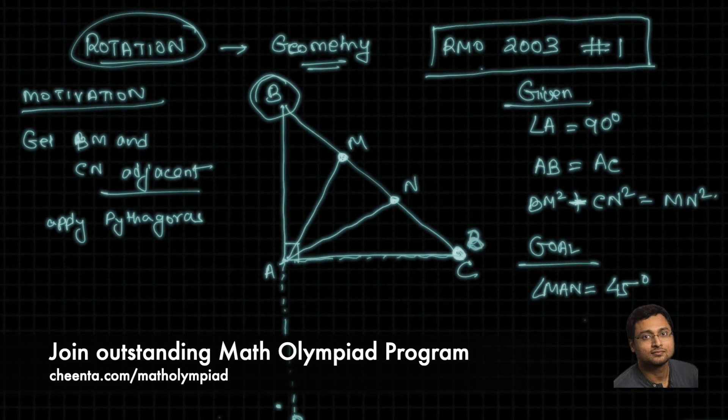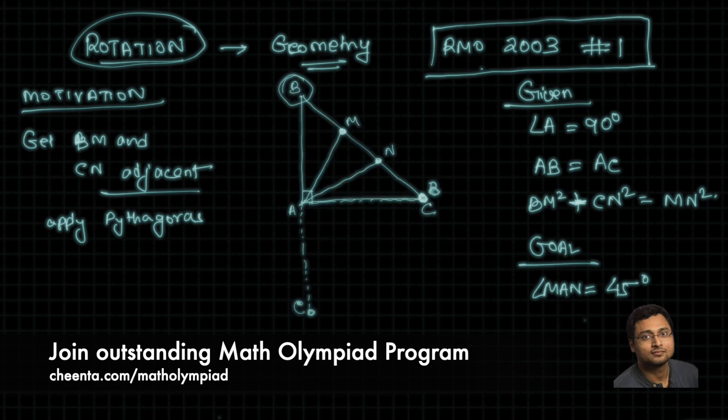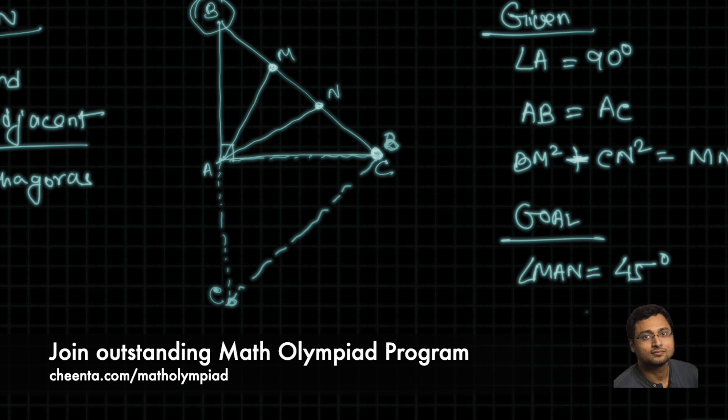This point is C and if we join these two lines, it will be BC. So, let's join it. Now, where is M? Of course, M is closer to B. So, M is somewhere here. Let's call it M prime. In fact, let's call this one C prime and this is B prime. And this point is N prime. Notice that AN gets 90 degrees rotated and comes to AN prime. Similarly, AM gets 90 degrees rotated and comes to AM prime and so on.